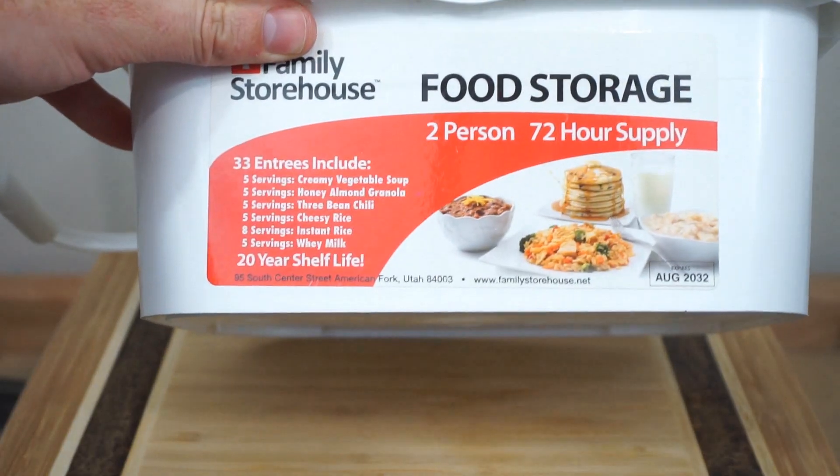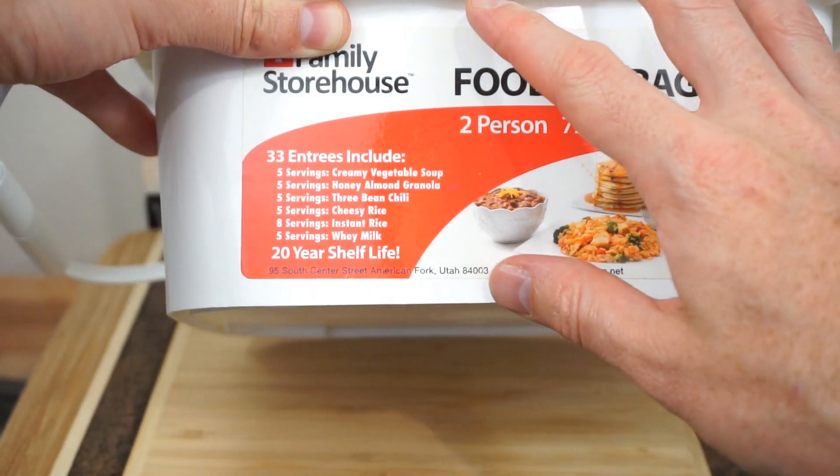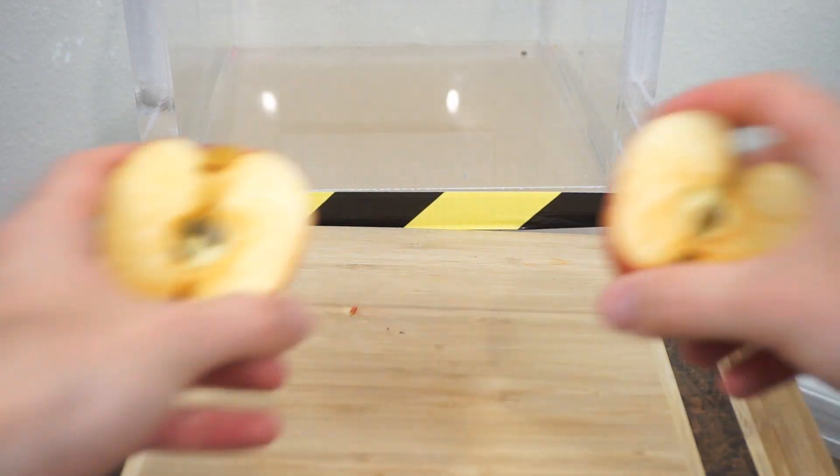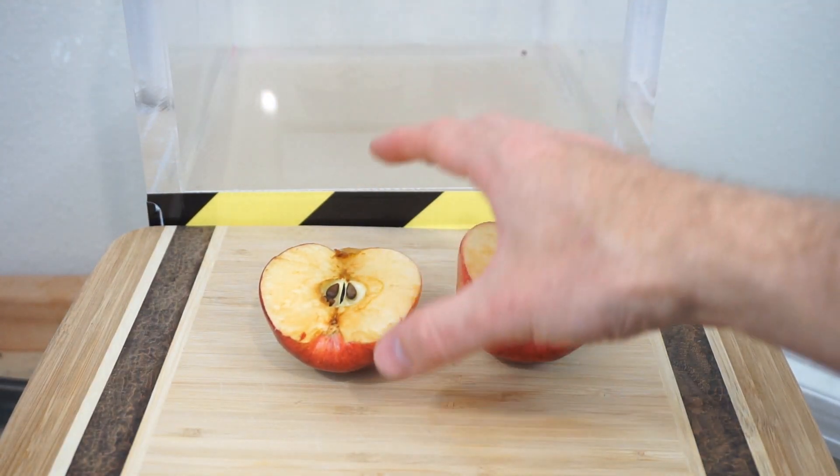For example, here is a 72 hour supply of food with a 20 year shelf life. So that's because this is freeze dried and vacuum bagged. So having no oxygen does two things. The first thing it does is stop things from oxidizing.